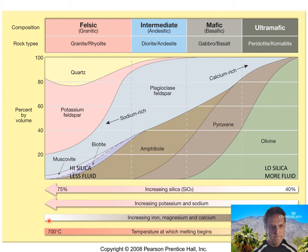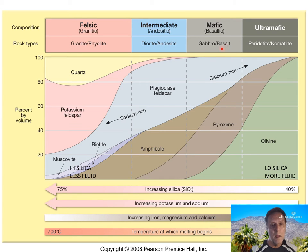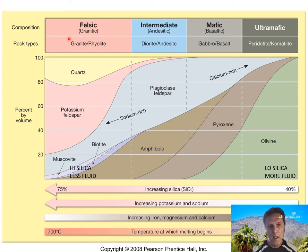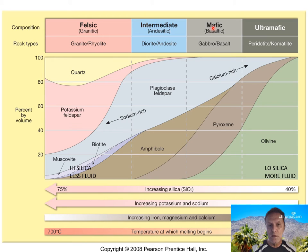Going from left to right on the chart, silica decreases but iron, magnesium, and calcium increase. Basalt would have more iron and magnesium — that's reflected in the name 'mafic': 'ma' for magnesium and 'fic' for Fe, the chemical symbol for iron. On the left side, 'felsic' means more feldspar and more silica. So: more silica, less iron and magnesium on the left; more iron and magnesium, less silica on the right.